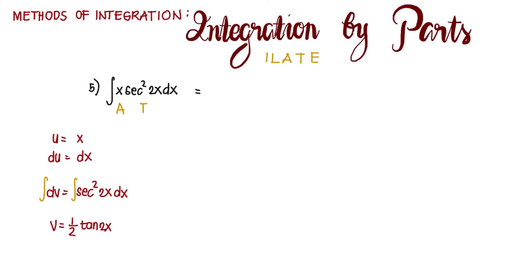So we substitute using the formula. We're going to need u, we're going to need v, and we're going to use du for substitution. So u is x, v is 1 half tangent of 2x, minus the integral of v, which is 1 half tangent of 2x, and then du is dx. So that's uv minus the integral of v du.